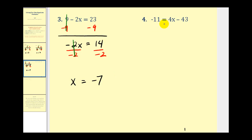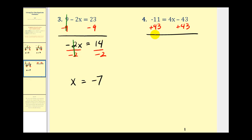Number four, we have negative eleven equals four x minus forty-three. The variable is on the right side this time, so we're trying to isolate this x. The four is attached by multiplication, and this is attached by subtraction. So to undo the subtraction first, we'll have to add forty-three on both sides. Watching our signs here: negative eleven plus forty-three is going to give us positive thirty-two. We have four x and then minus forty-three plus forty-three — that's going to be zero.